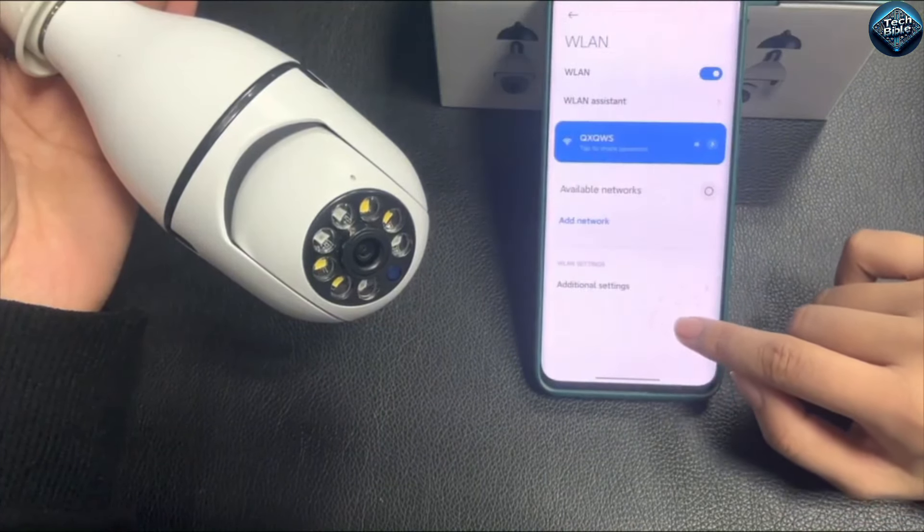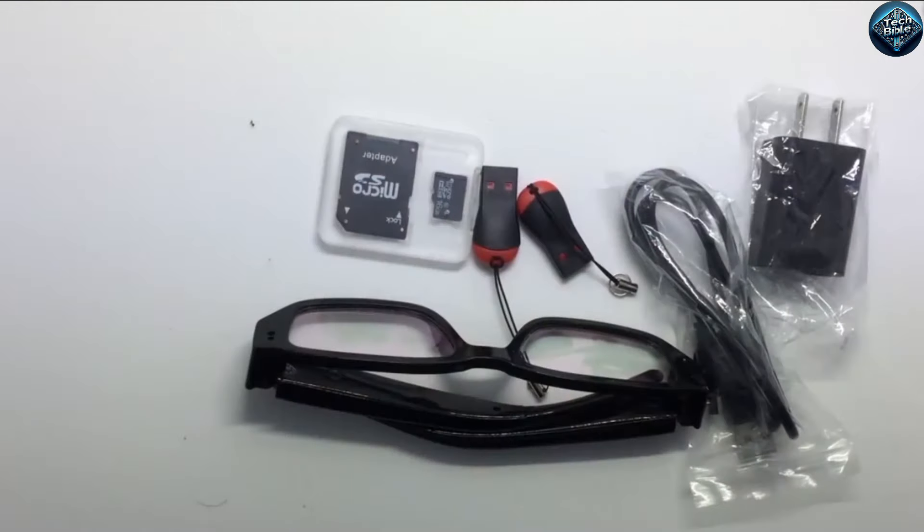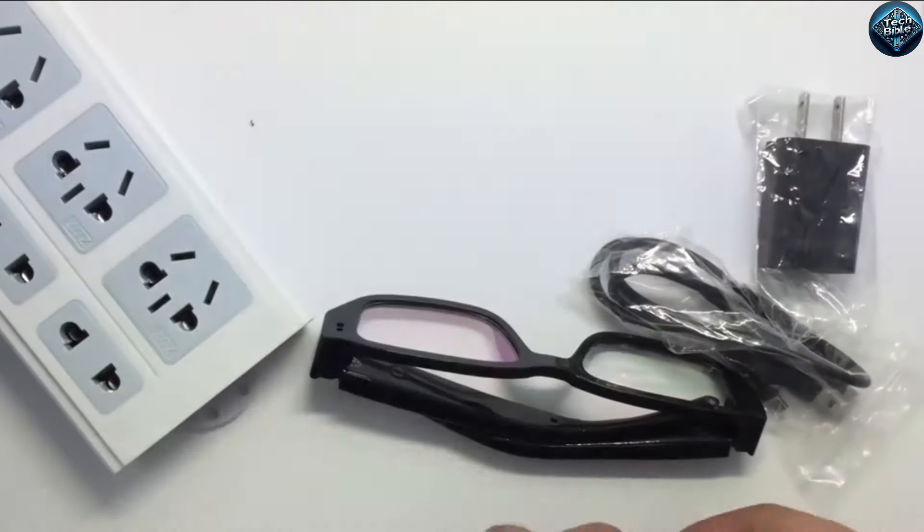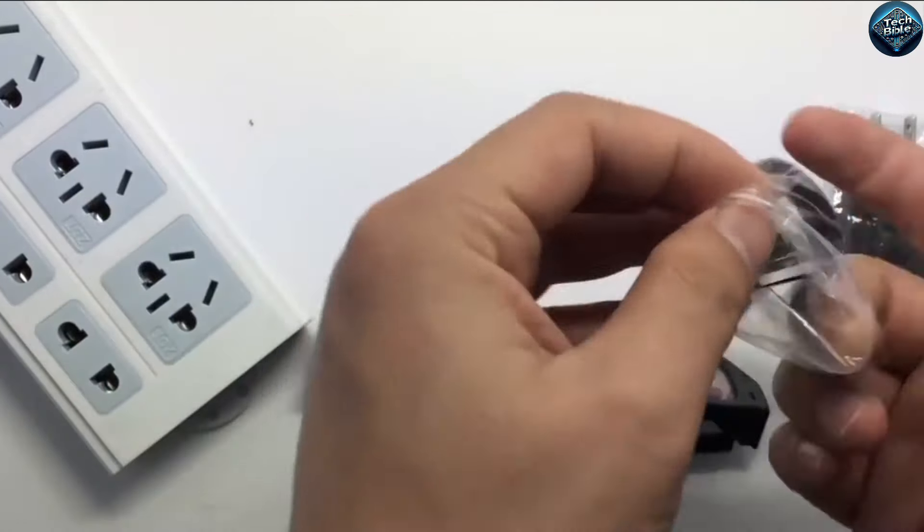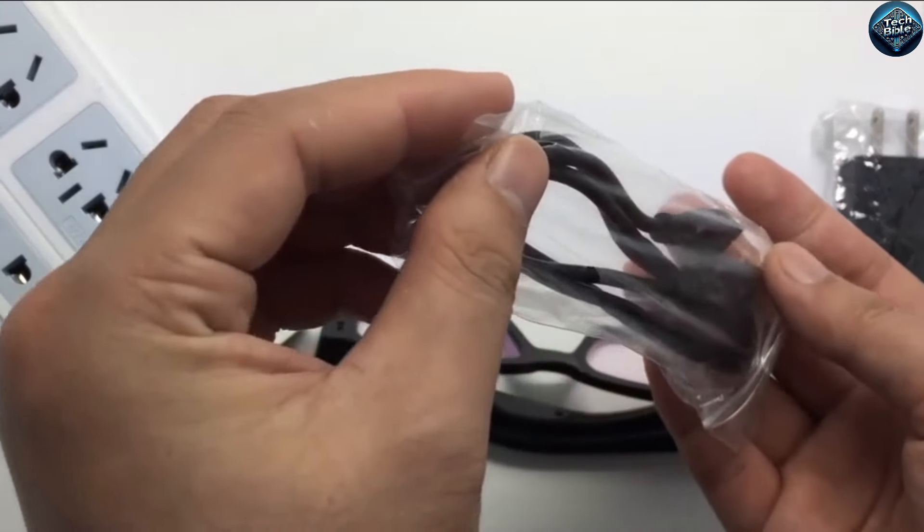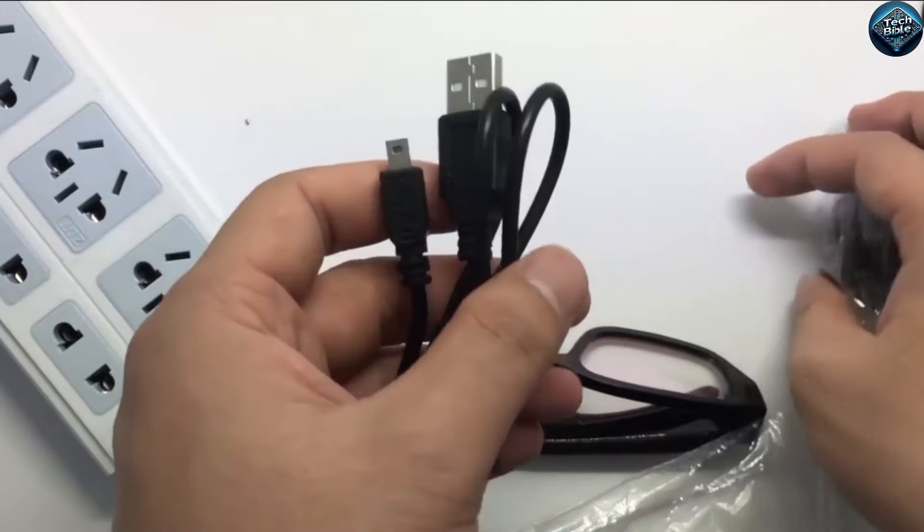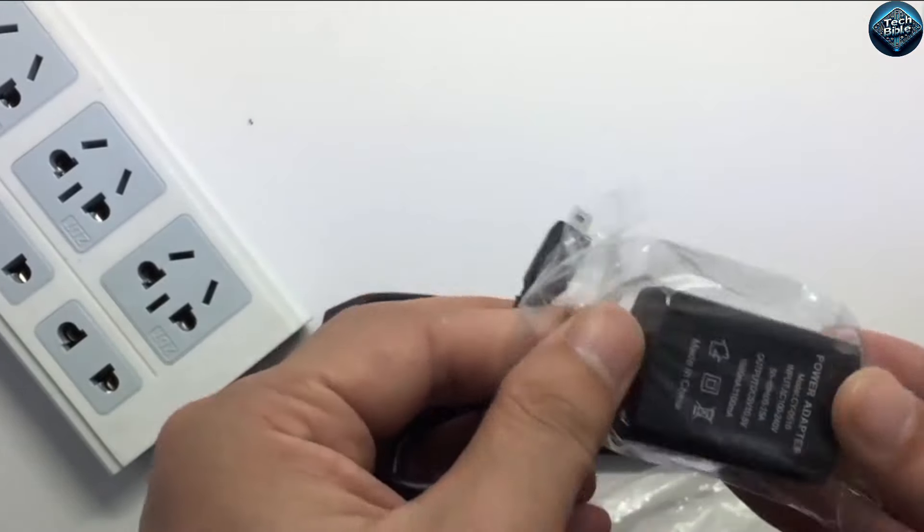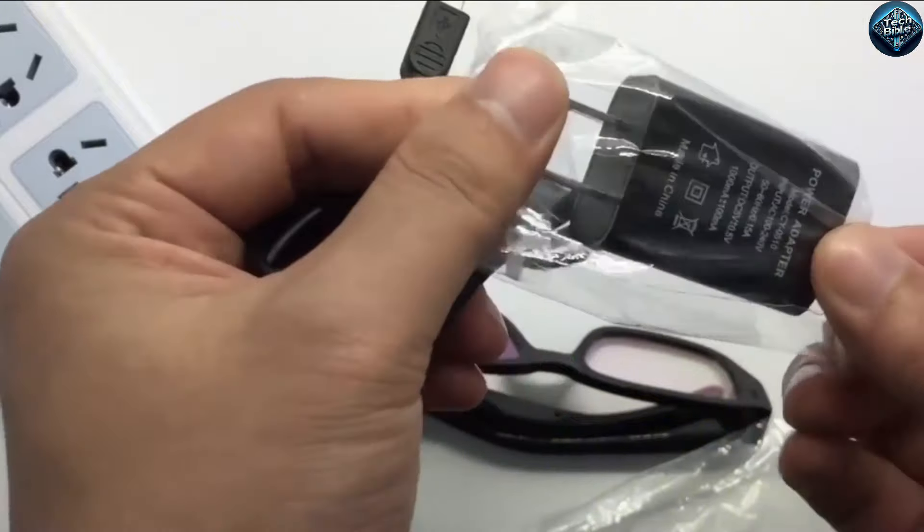The Midsu Spy Glasses are a controversial gadget that were banned due to their potential for misuse. These discrete glasses come equipped with a hidden camera, capable of recording high-definition video without detection. While they were originally marketed for personal security and investigative purposes, concerns arose over privacy violations leading to their ban.